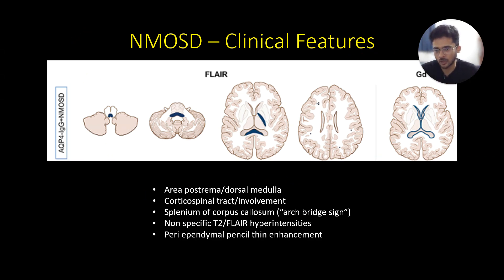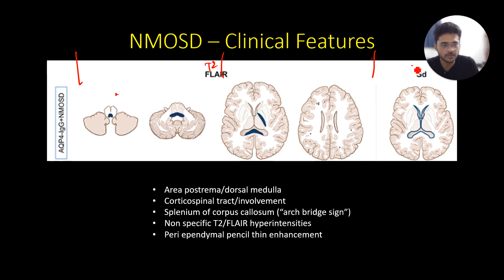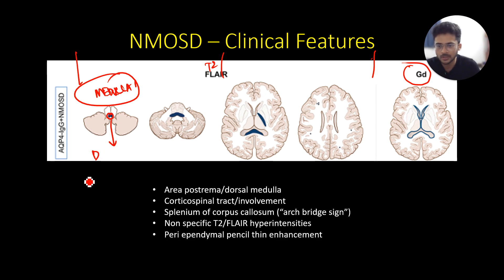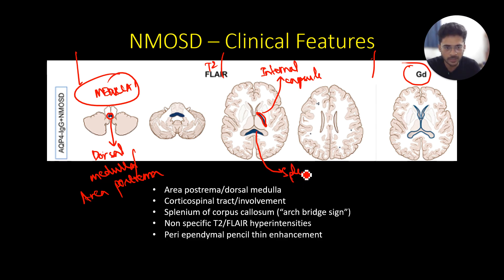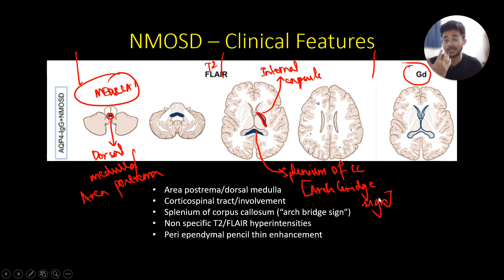Coming to brain involvement, on T2 FLAIR images the classical areas seen in NMOSD include: a cross-section at the level of the medulla showing involvement of the dorsal medulla — the area postrema — indicating area postrema syndrome. There can also be involvement of the corticospinal tracts at the level of the internal capsule. Involvement of the splenium of the corpus callosum is known as the arch bridge sign.